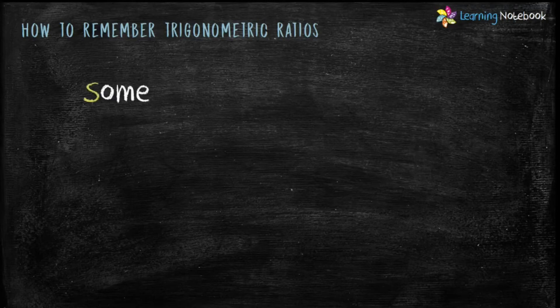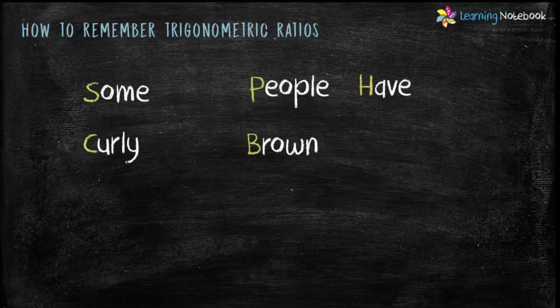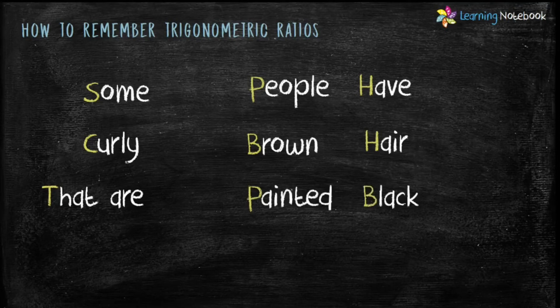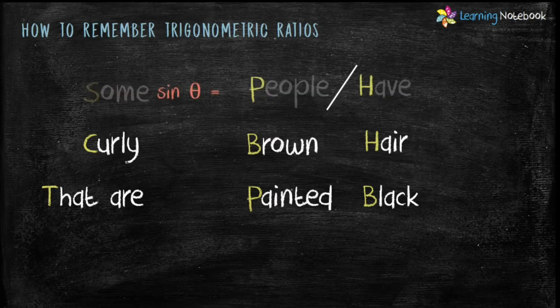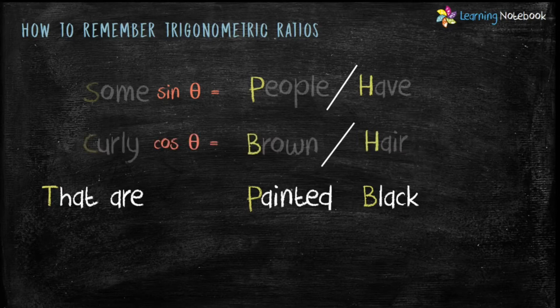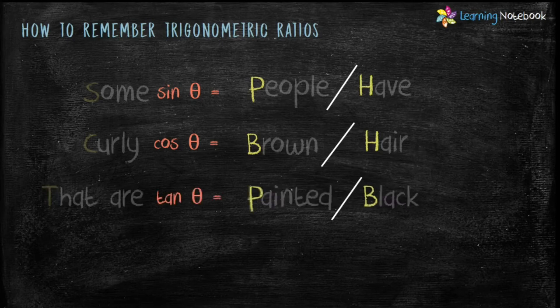The second way is in English: Some People Have Curly Brown Hair That Are Painted Black. Take the first letter of each word. The first row gives sin theta equals P upon H, the second row gives cos theta equals B upon H, and the third row gives tan theta equals P upon B. Students, you can use either of these two methods to remember the trigonometric ratios.